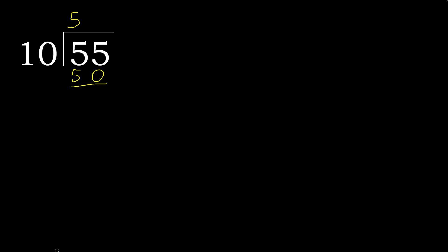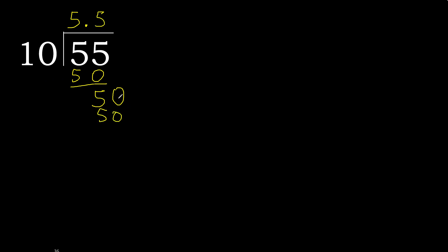55 minus 50 is 5. That is not a whole number, therefore always complete with 0 here, with a point: 0 point. 50. 10 multiplied by 5 is 50, which is not greater. Subtract 0. 0, therefore finished. 55 divided by 10 is 5.5.